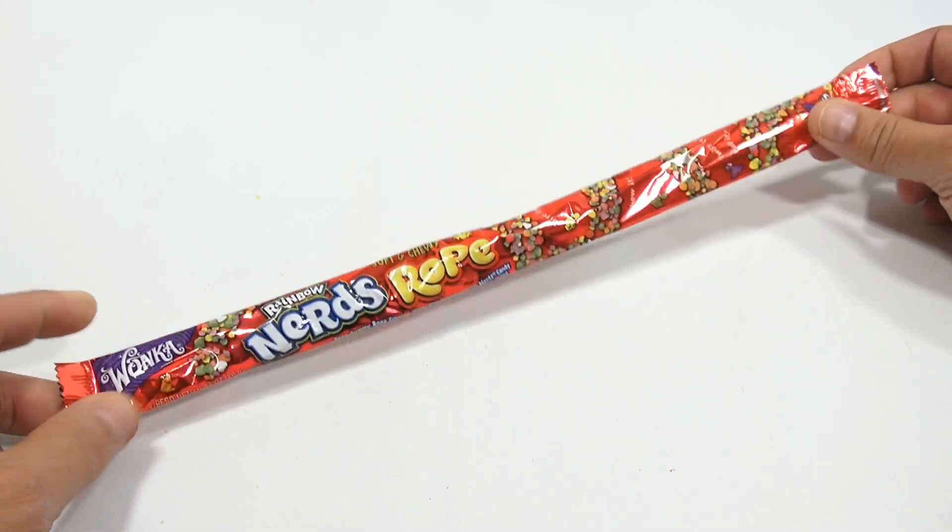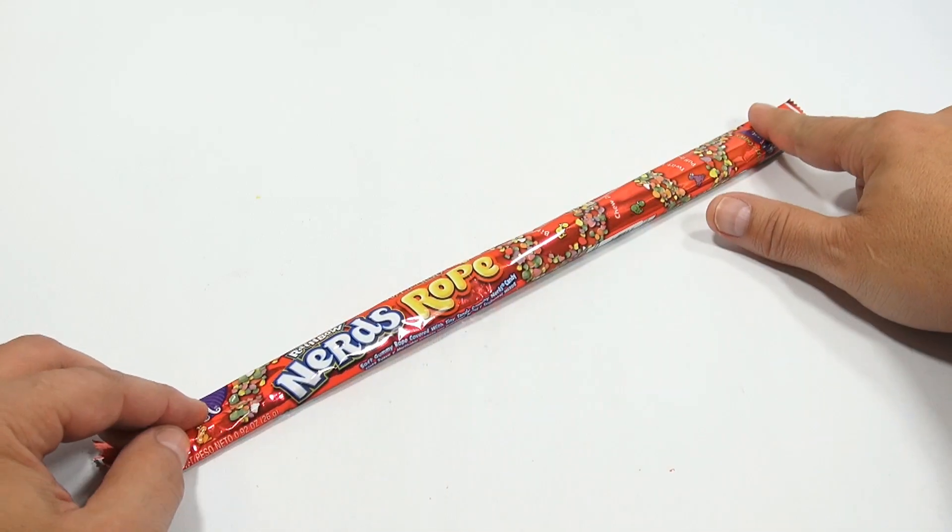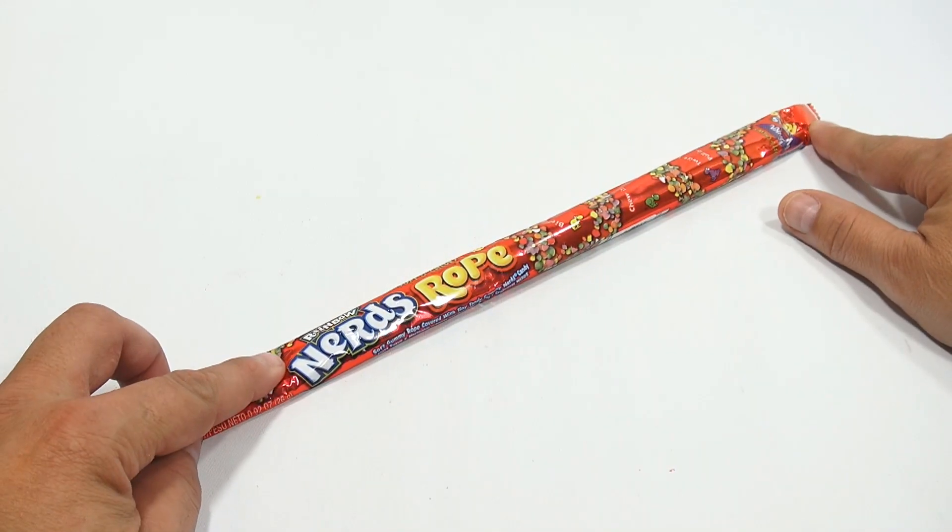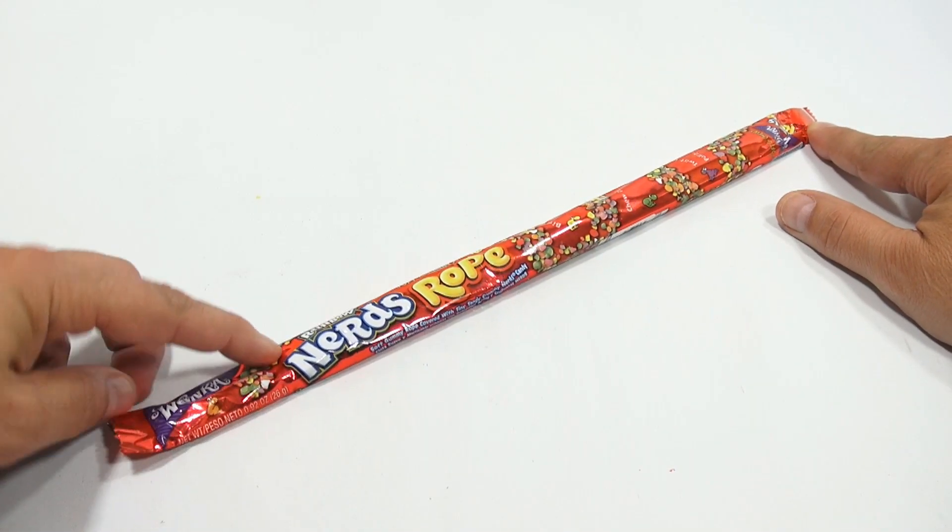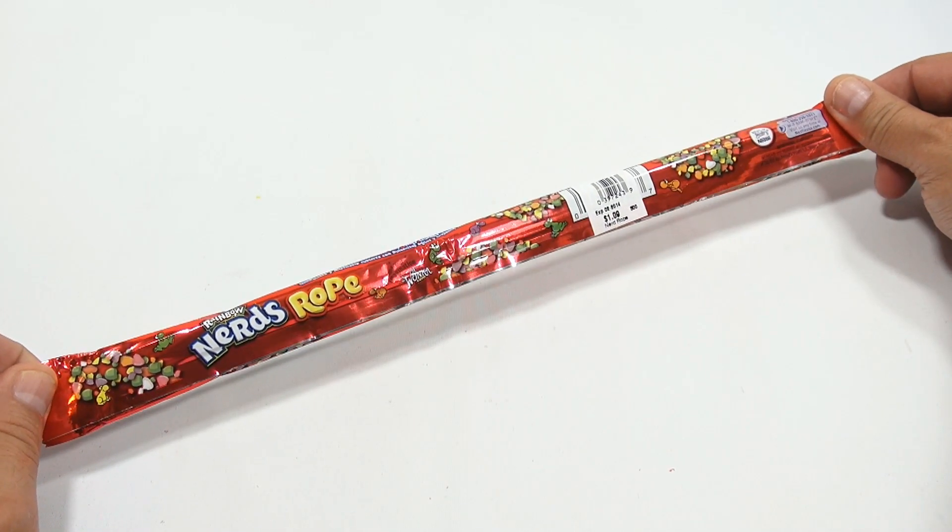It says soft and chewy, so we'll see. The other one was very short in the packaging, and this one looks like it's short too compared to the length here. It goes back to maybe about here, so this is not candy but it will stretch out. Rainbow Nerds Rope.